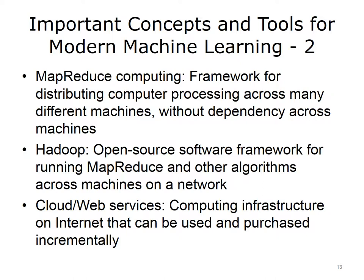There are other important concepts and tools in modern machine learning. One is MapReduce Computing, which provides a framework for distributing computer processing across many different computers, including those across the Internet, with no dependency of the processing on one machine from another, enabling parallel processing on many different machines. Hadoop is an open-source software framework that allows the running of MapReduce and other algorithms widely distributed across computer networks, including across the Internet. We may also hear about cloud or web services, where there is a computing infrastructure on the Internet that can be used and purchased incrementally.